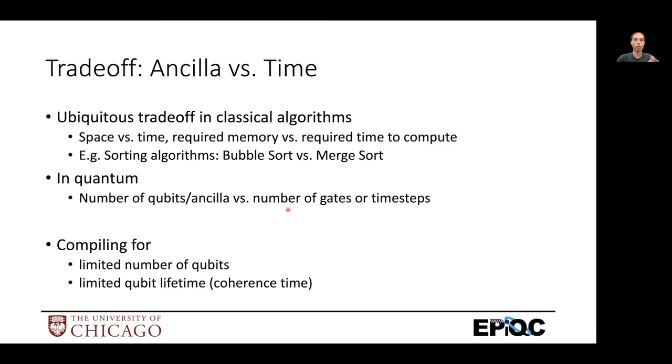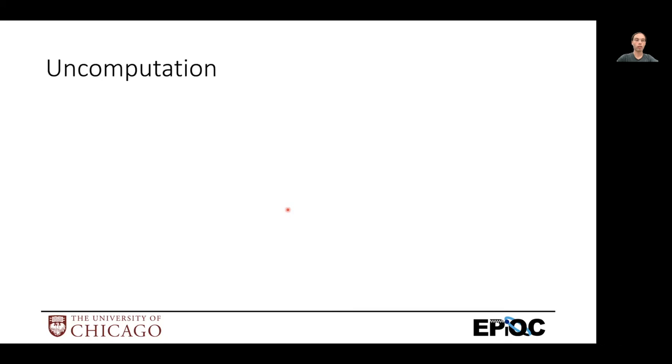So it's very critical to look at, to balance the number of Ancilla versus the amount of time. And we'll be under hard constraints when compiling for this. Okay, so now let's talk about the second half of today's video is uncomputation.